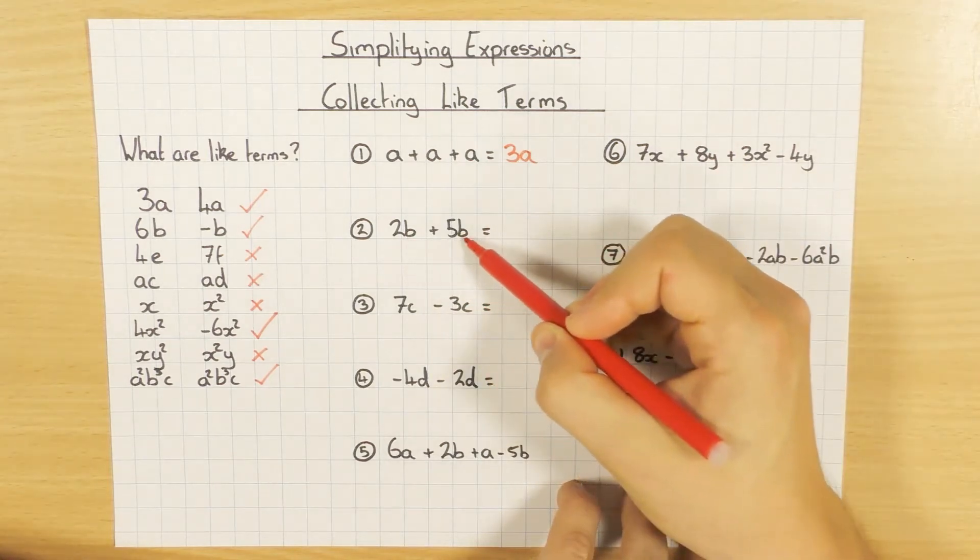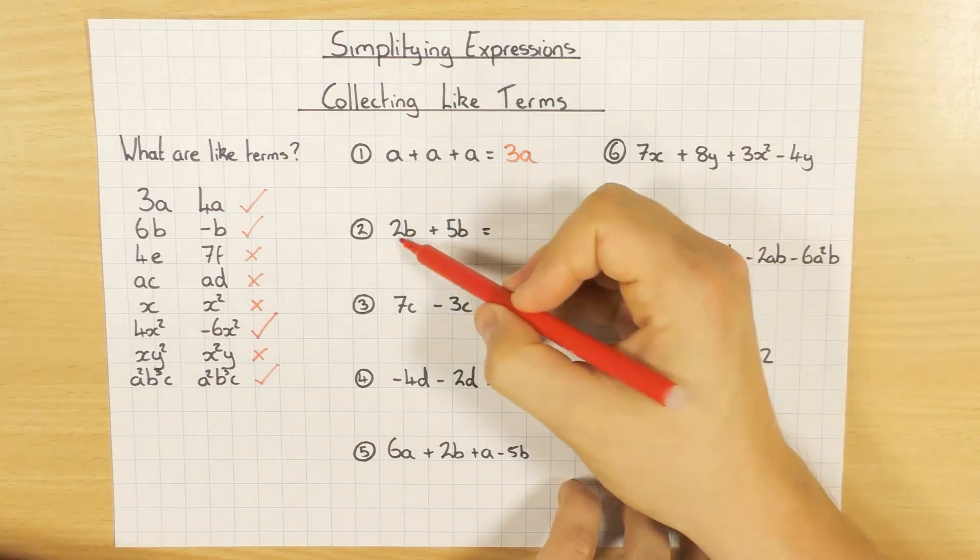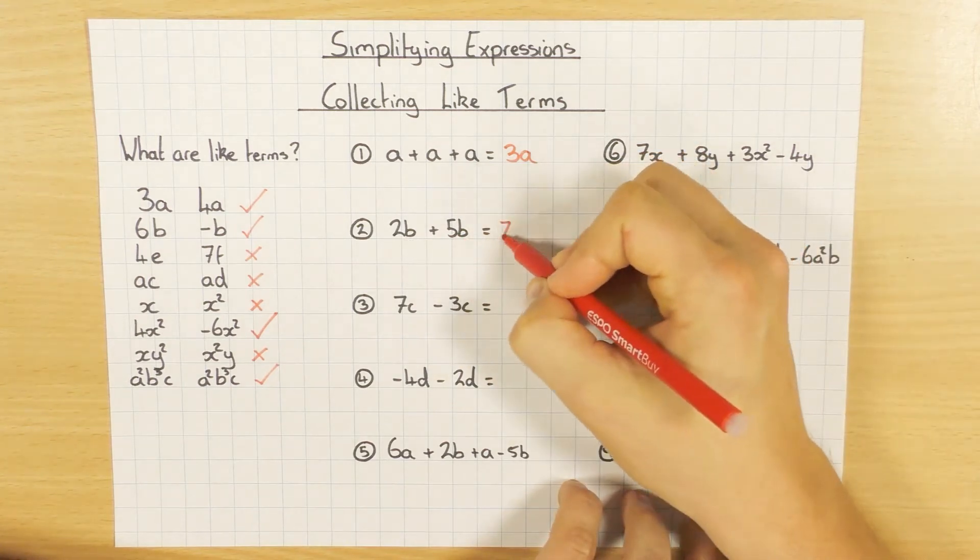Same thing here. I've got a B and a B. They are the same. They are like terms. So I can collect them. 2B plus 5B. Well, that's 7B.